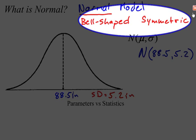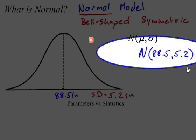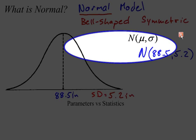A normal model is always bell-shaped and symmetric. So in this case, if you see this, you know it's a bell-shaped and symmetric distribution with a mean of 88.5 and a standard deviation of 5.2.